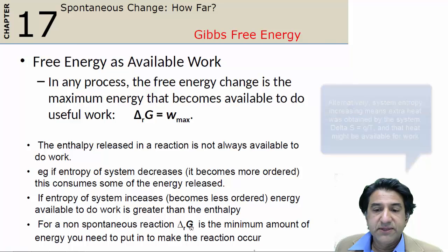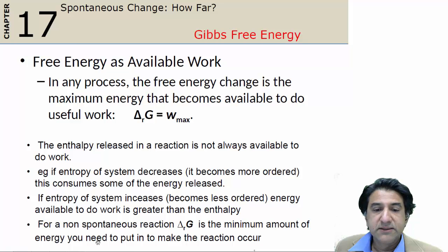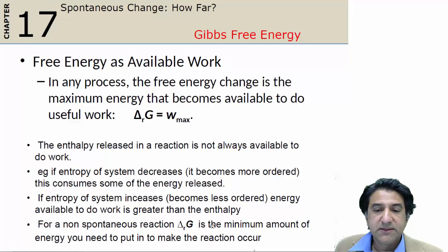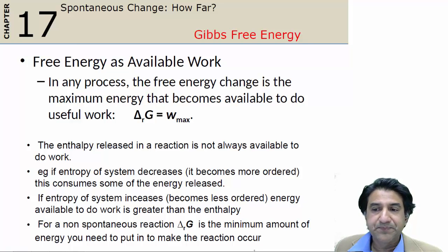For a non-spontaneous reaction, delta G is the minimum amount of work you need to put in to make the reaction occur. If delta G is negative 5 units of energy, that means you can get that amount of work out. And if delta G is positive, you have to put that amount of work or energy into the system to make that happen.